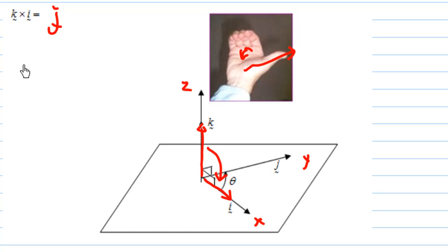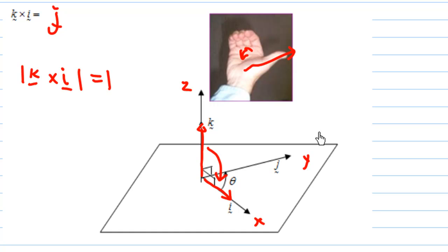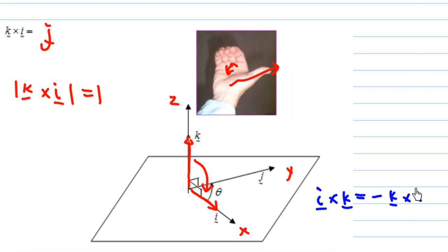This is because k cross i is in the same direction as j, and the magnitude of k cross i is equal to 1. Similarly, i cross k is the negative of k cross i, and since k cross i is j, i cross k equals negative j.